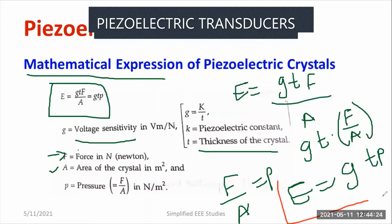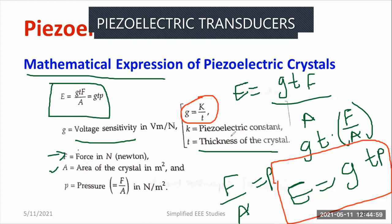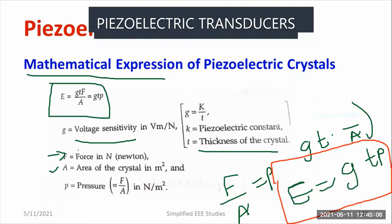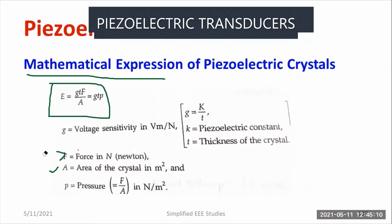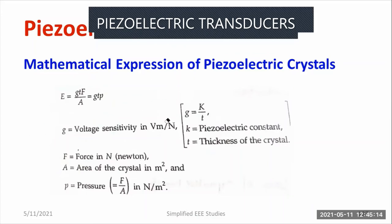So the final equation is E = G × T × P. The EMF produced across the piezoelectric transducer is directly proportional to pressure P, voltage sensitivity G, and thickness T of the material. You can write E is directly proportional to P, T, and G. G is nothing but the piezoelectric constant related to the thickness of the crystal, and it varies depending on the type of crystal you employ. This is the mathematical expression, which is very important for solving numerical examples. I'll be putting numerical examples in the upcoming sessions — kindly follow up.